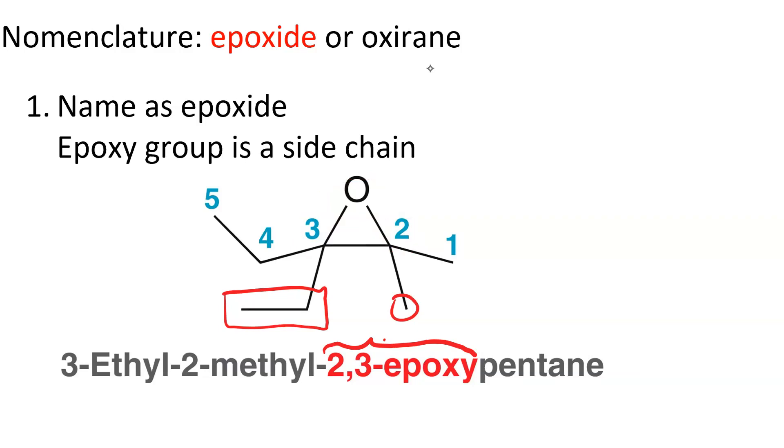And then there's an ethyl group on carbon-3, and ethyl comes before methyl. The methyl group is on carbon-2. So 3-ethyl, 2-methyl, 2,3-epoxypentane.